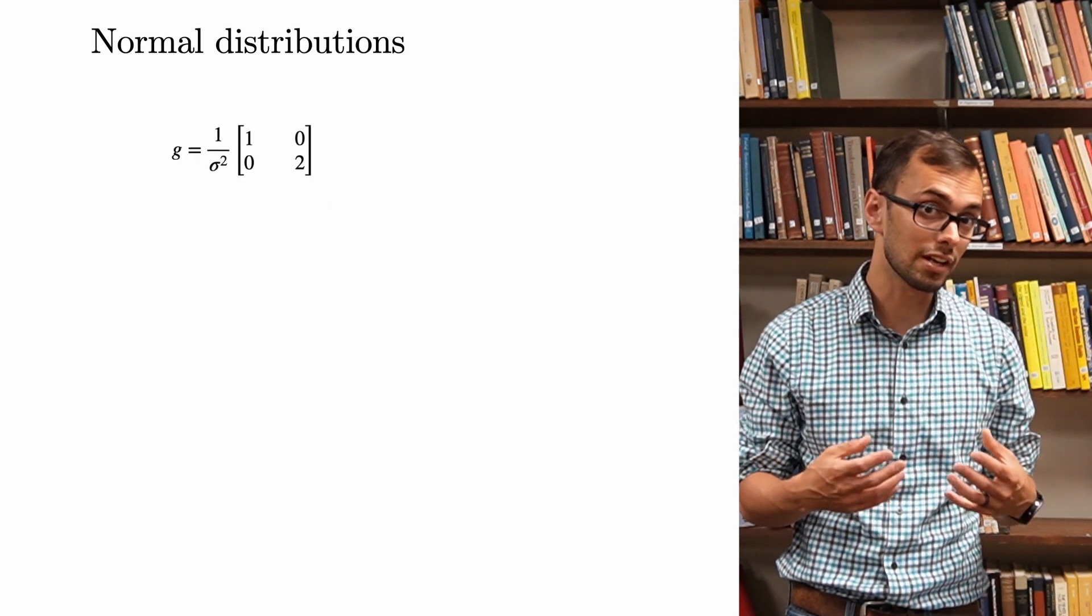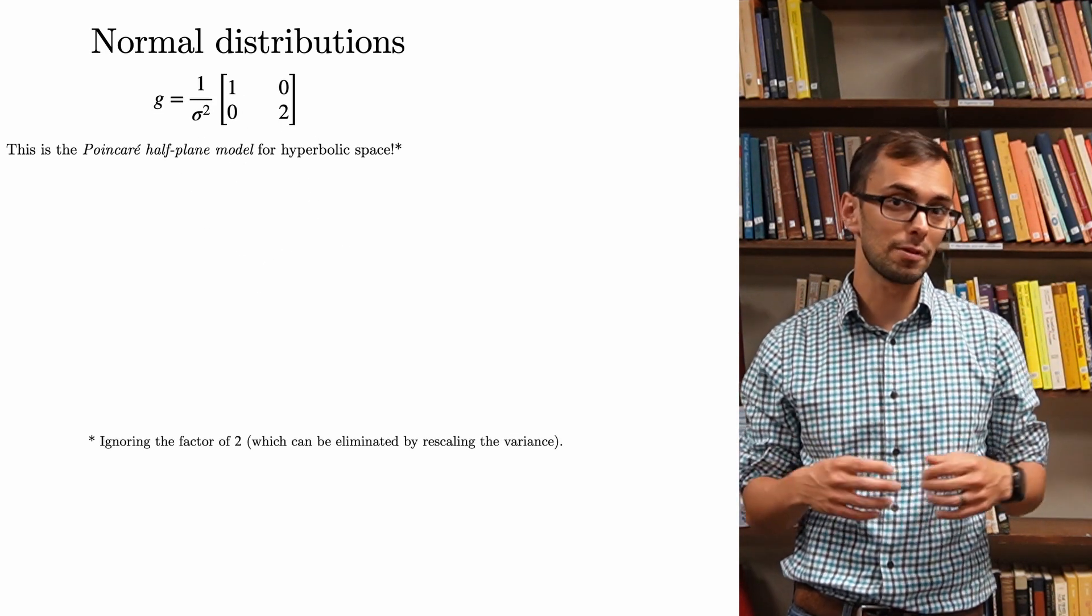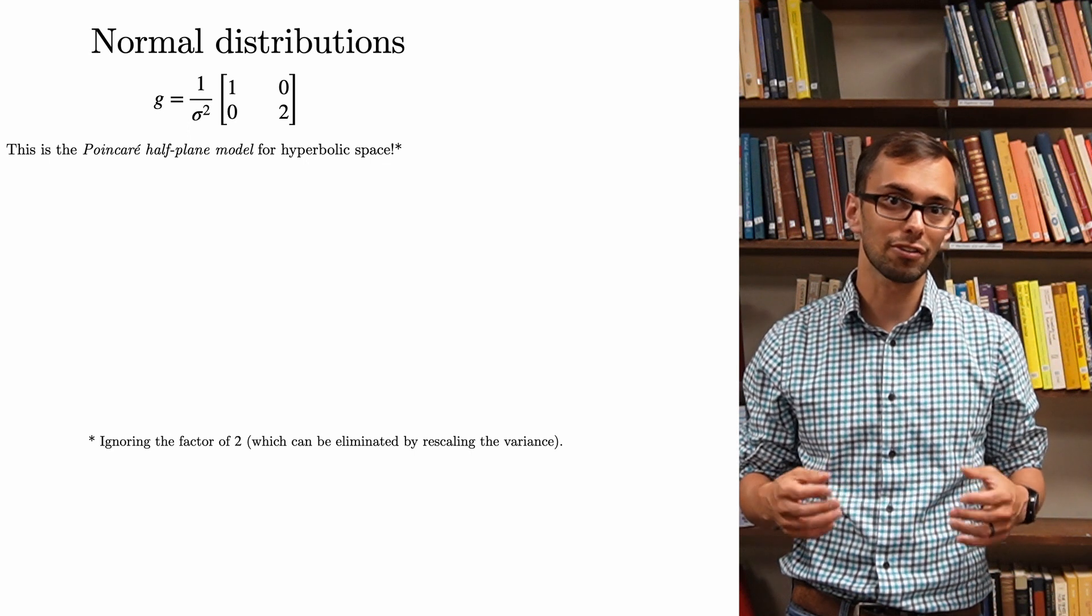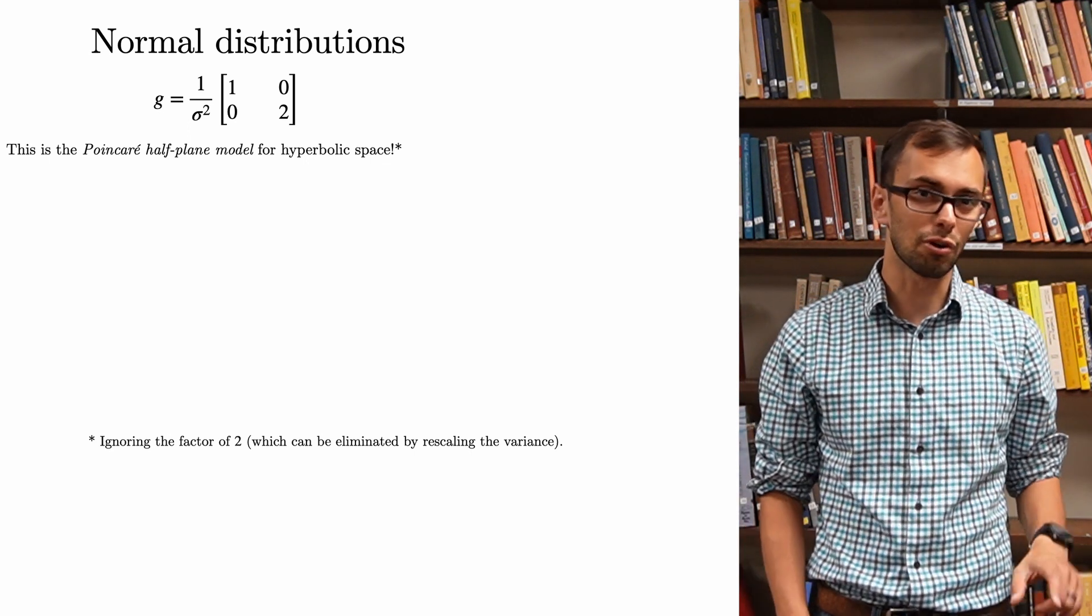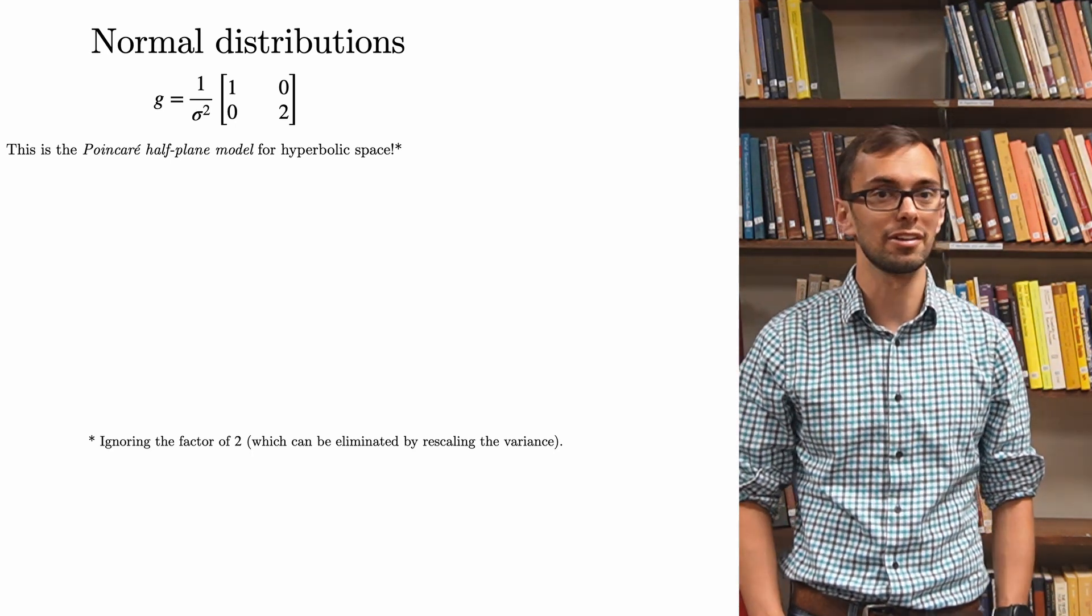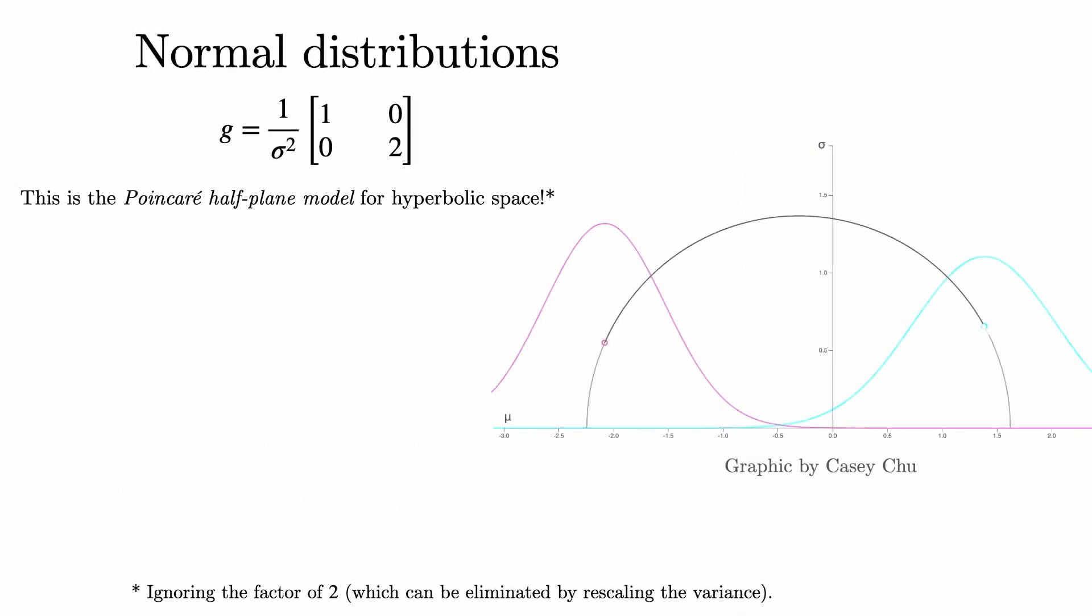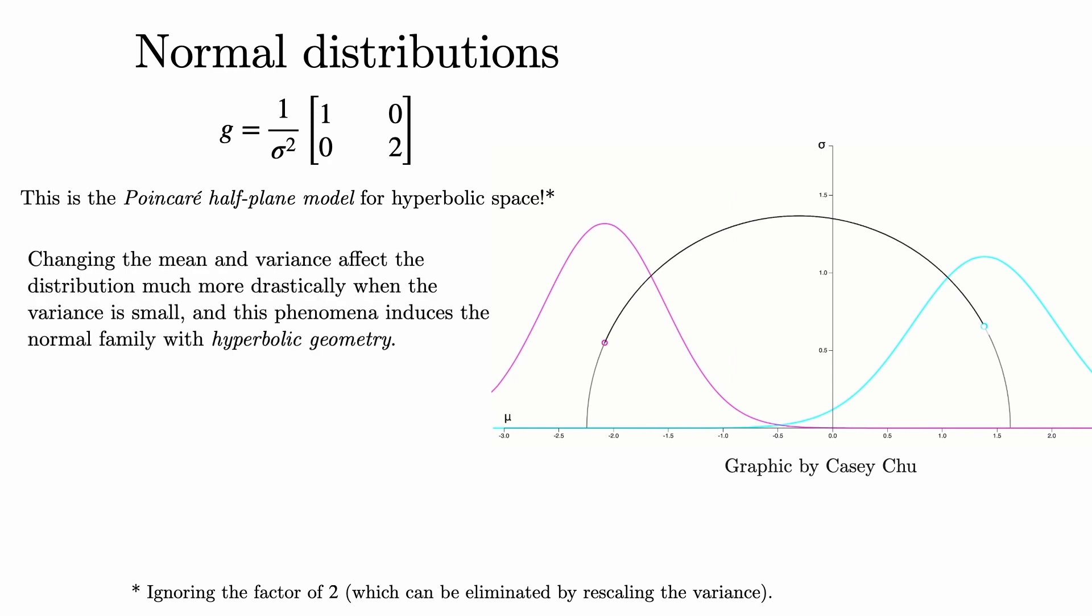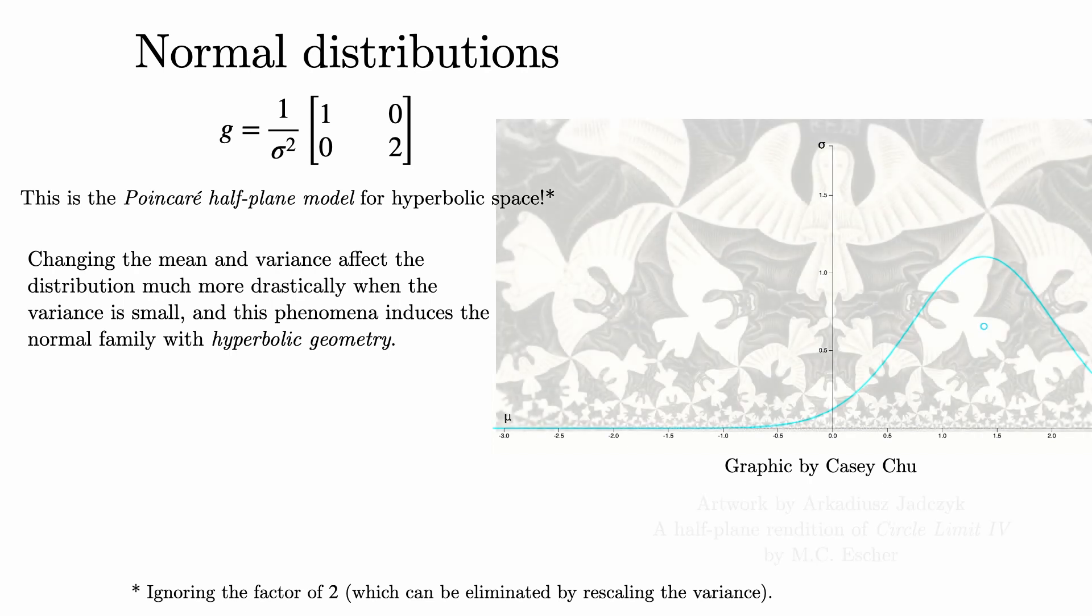And if you've studied some non-Euclidean geometry, this expression might be familiar. It's the Poincaré model for hyperbolic space, ignoring that factor of two, which can be eliminated by scaling the variance. Changing the mean and the variance affects the distribution much more drastically when the variance is small. And this phenomenon induces the normal family with hyperbolic geometry. Shown here is a geodesic in the space of normal distributions. And we can use these sorts of calculations to compute many other geometric quantities.